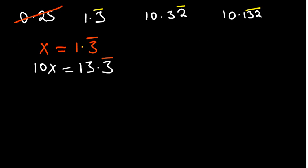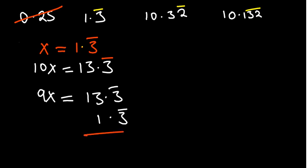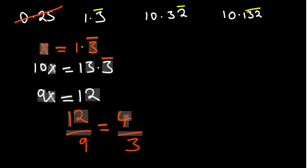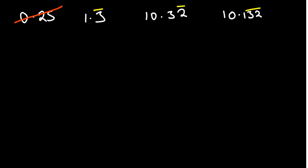Now we subtract both sides: 10x minus x gives 9x. On the right, 13.3 recurring minus 1.3 recurring — the recurring parts cancel out. We end up subtracting to get 12, so 9x = 12. Dividing both sides by 9 gives 12 over 9. The common factor is 3: 12 ÷ 3 = 4 and 9 ÷ 3 = 3, giving 4 over 3. You can verify: 4 ÷ 3 = 1.3 recurring.